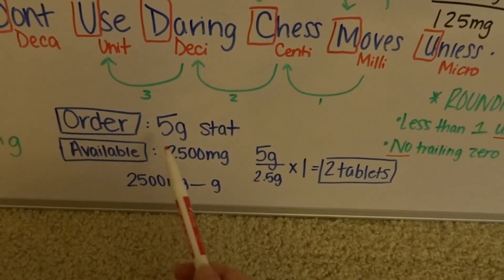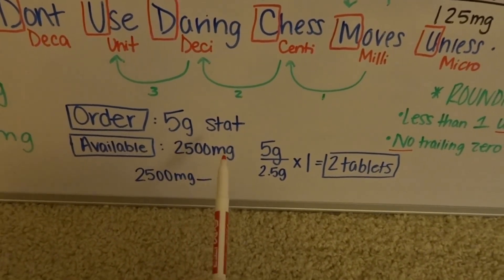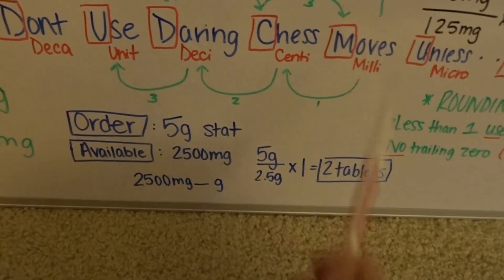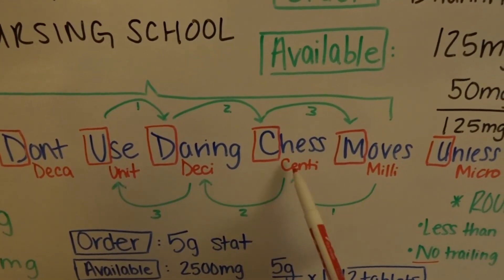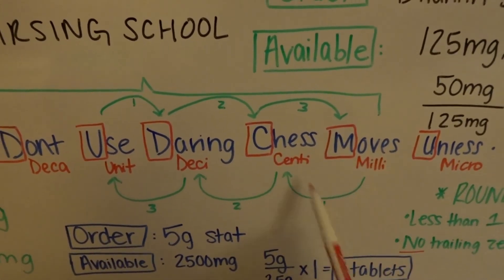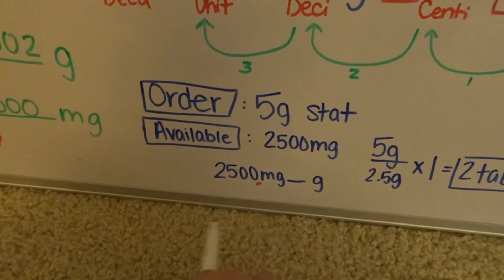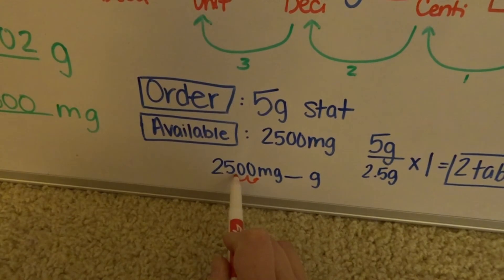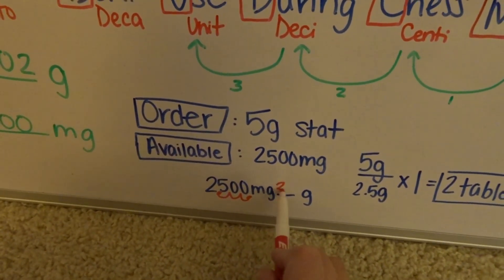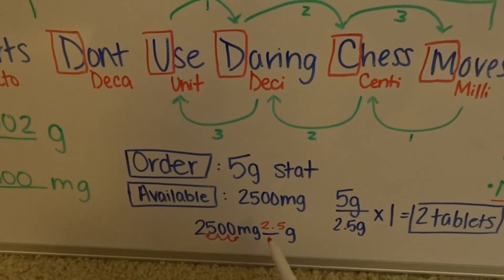Here's a problem you might see: the order is to give 5 grams stat. Available is 2,500 milligrams. We need to take 2,500 milligrams and turn it into grams. With milli, gram is a base unit, so we know we're going to unit — moving to the left: 1, 2, 3. Our decimal is right after the number, so move it 1, 2, 3 places. Put in our decimal — now we have 2.5. So 2,500 milligrams equals 2.5 grams.